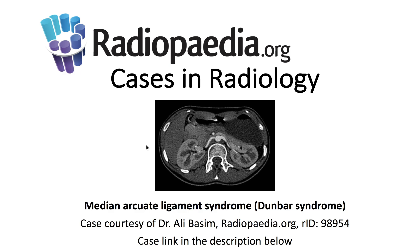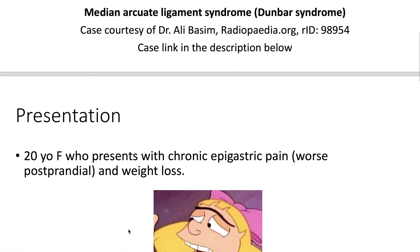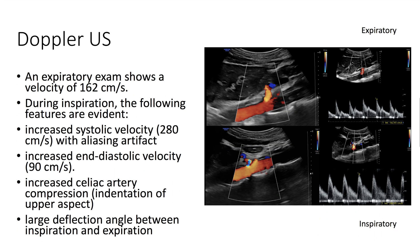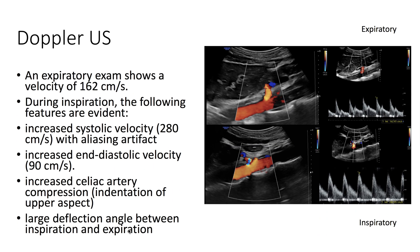Today's Radiopaedia.org case in radiology covers median arcuate ligament syndrome, also known as Dunbar syndrome. The case link is in the description below. The patient is a 20-year-old female who presents with chronic epigastric pain worse postprandially and weight loss. Here we have the Doppler ultrasound, and we note on the expiratory exam that there is a velocity of 162 centimeters per second.